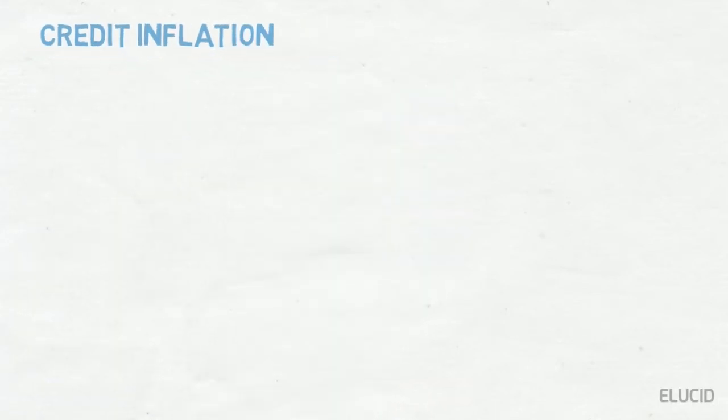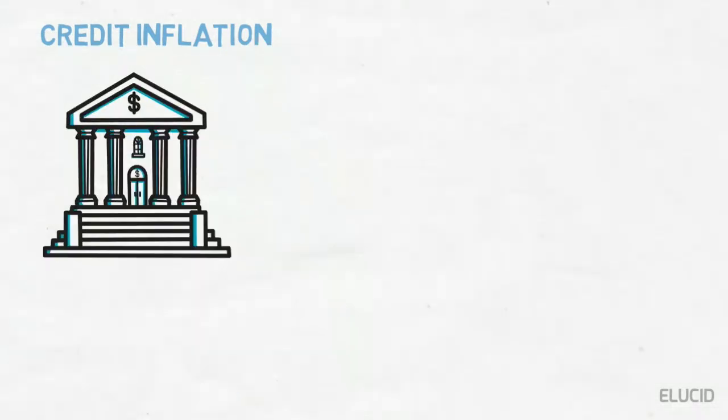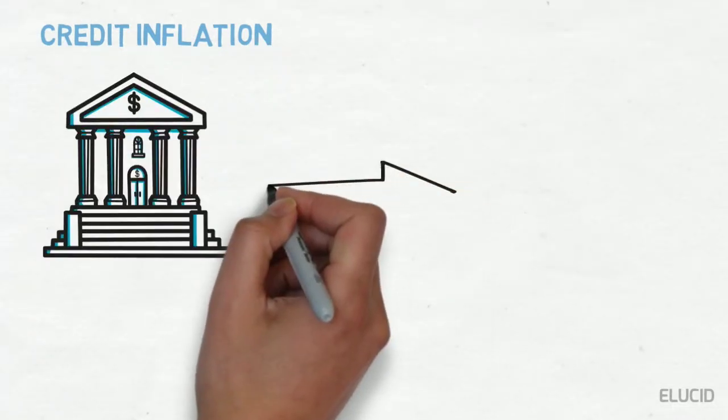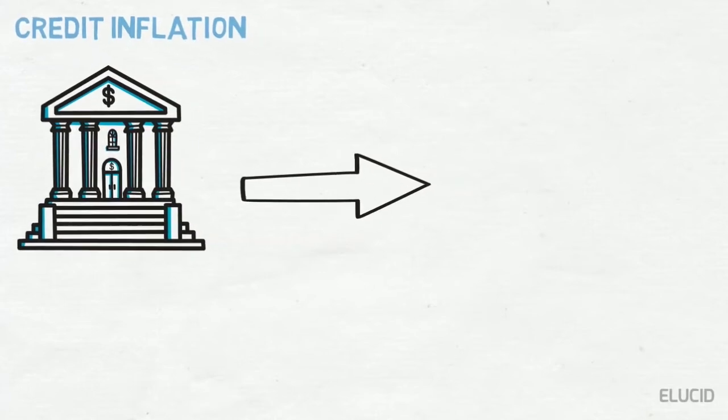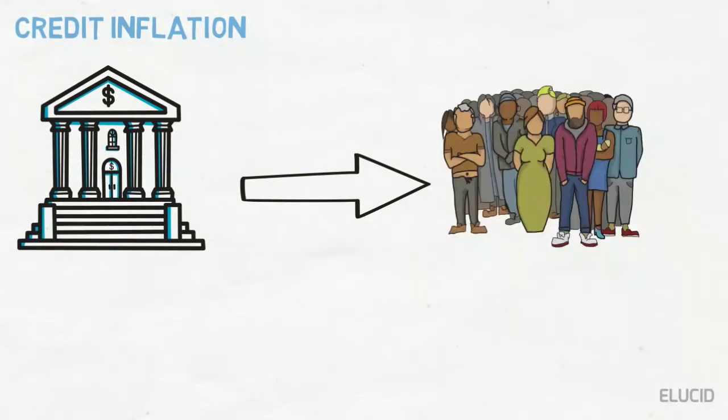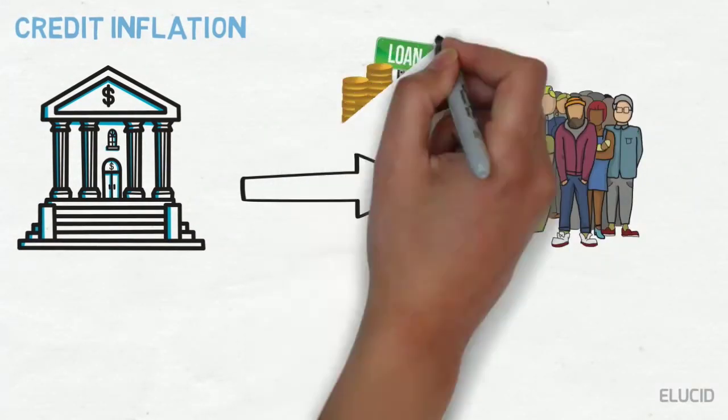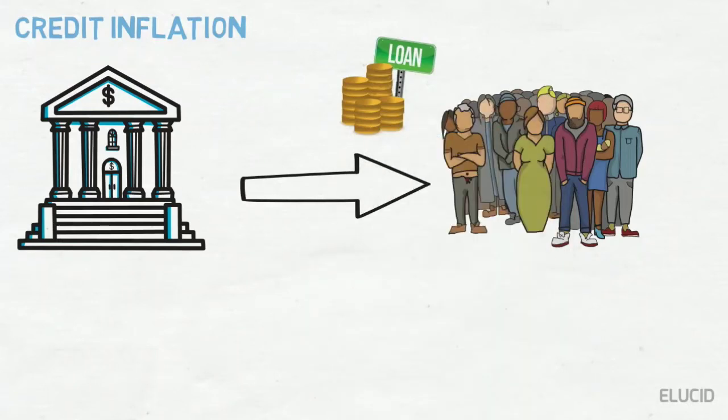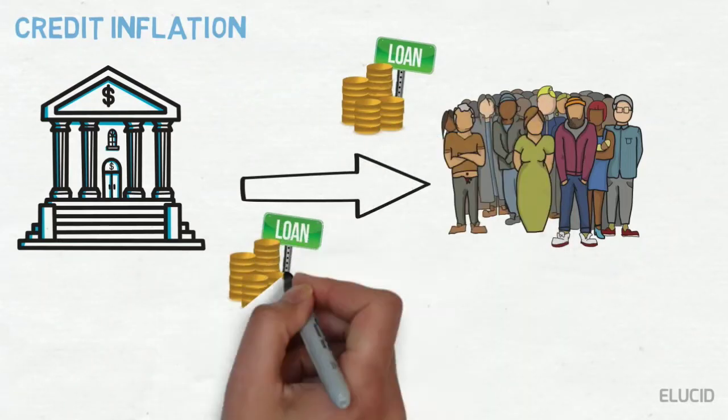Credit inflation. Being profit-making institutions, commercial banks sanction more loans and advances to the public than what the economy needs. Such credit expansion leads to a rise in price level.